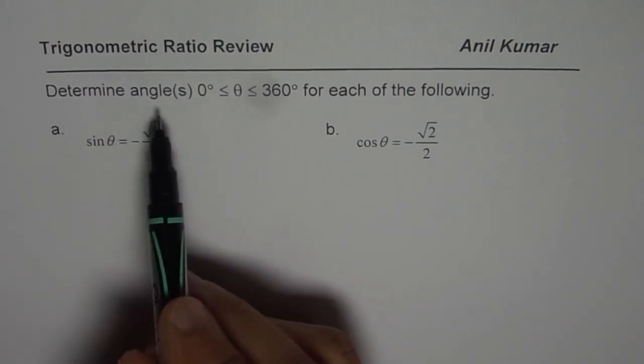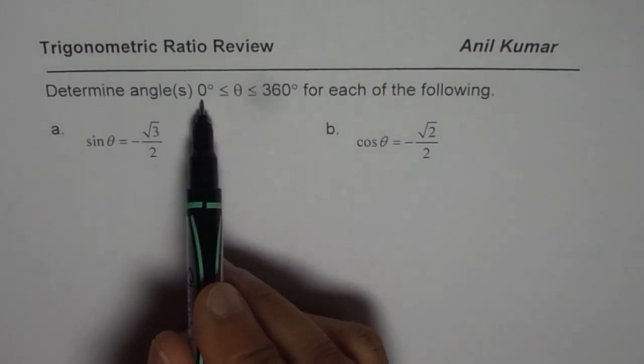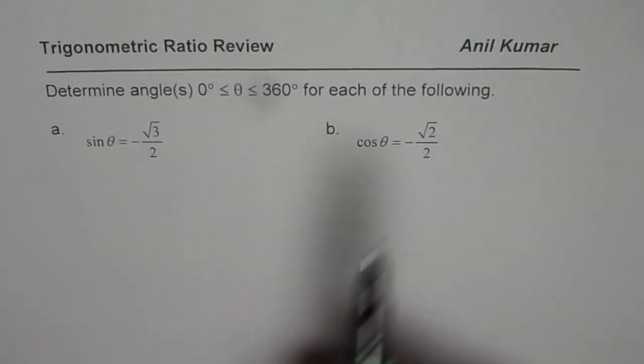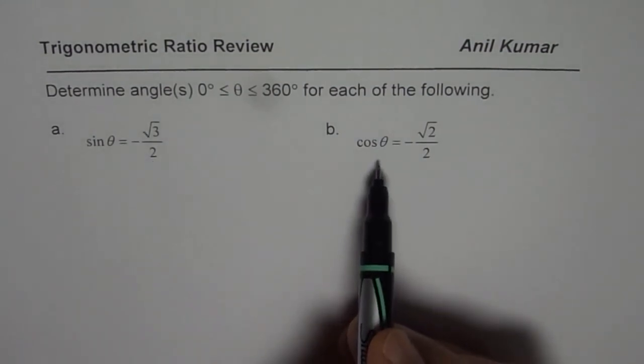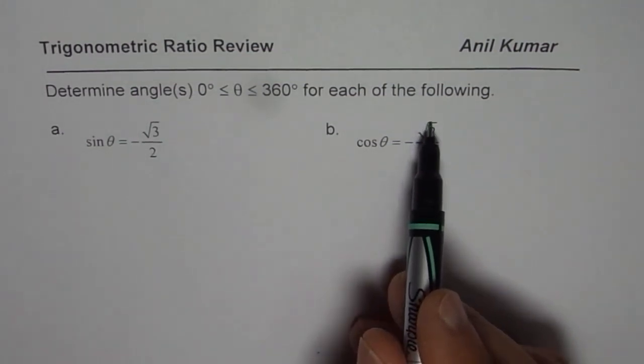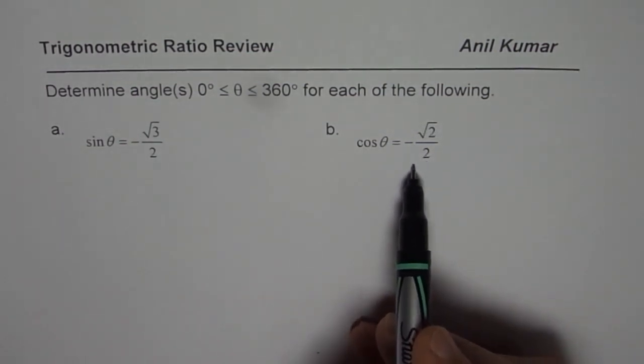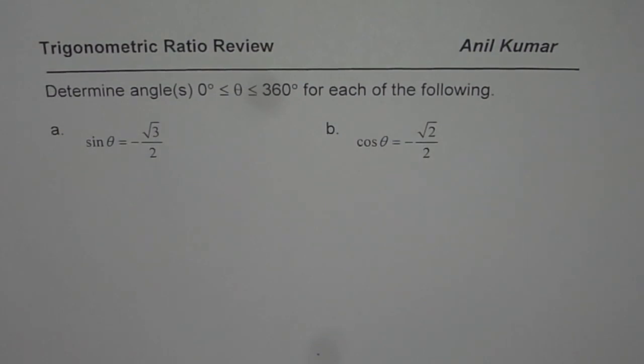The question is: determine angles which are between 0 to 360 degrees for each of the following. First one is sin θ equals minus square root 3 over 2. The second one is cos θ equals minus square root 2 over 2. I would like you to pause the video, answer the question, and then look into my suggestions.